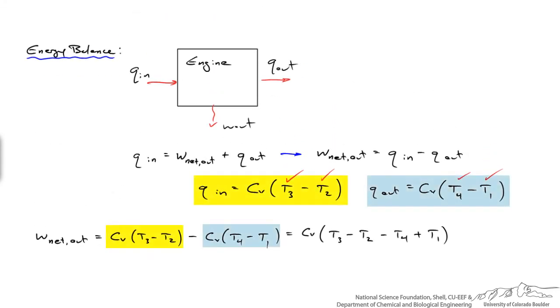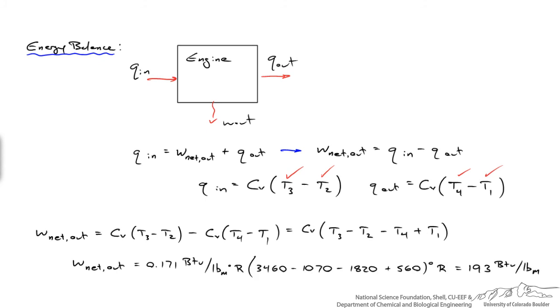By substituting Q in and Q out, I come up with this expression. I'll plug numbers in for these four temperatures, and the heat capacity constant volume. And what I come up with is the net amount of work leaving the system is a hundred and ninety three BTUs per pound mass of gas that's within the cylinder. So we've got something that looks like energy per unit mass.